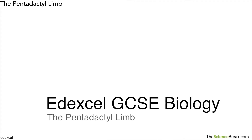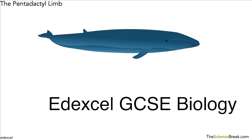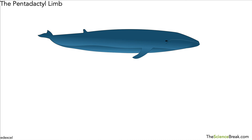Hello and welcome. Today we're looking at the pentadactyl limb for GCSE biology. We can start off by looking at a whale. A whale obviously swims in water, so you can imagine it's got to have structures that help it swim, and one of those structures is its flipper, which helps it to swim through the water and change direction.